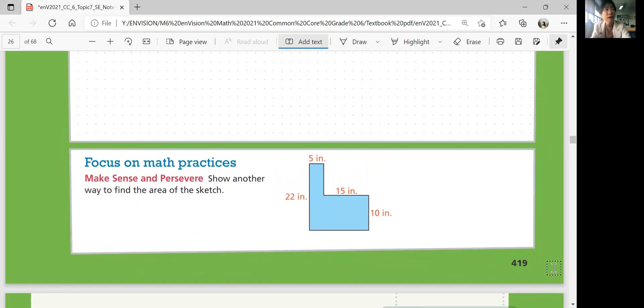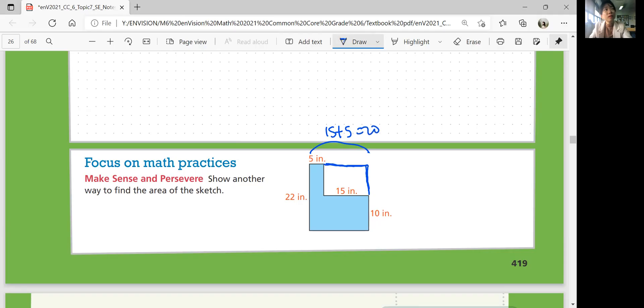Let's look at focus on math practices. Show another way to find the area of the sketch. What is another method? Yes, you can divide it in a different way. But can we solve for this area and then subtract this area? Yeah. So that's 22 inches and this is 15 plus 5 inches, which is 20 inches. So the area of the whole thing will be 22 times 20, which is 440.